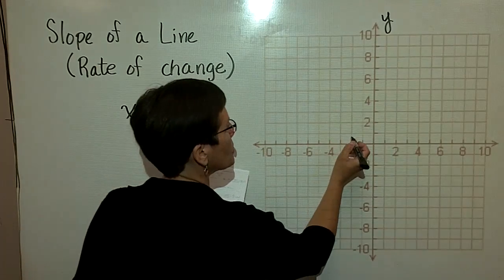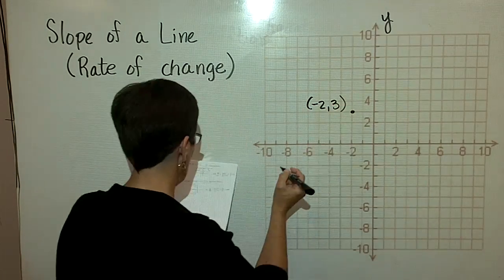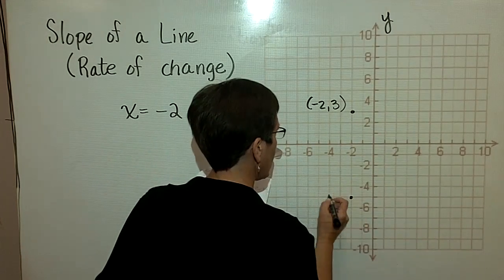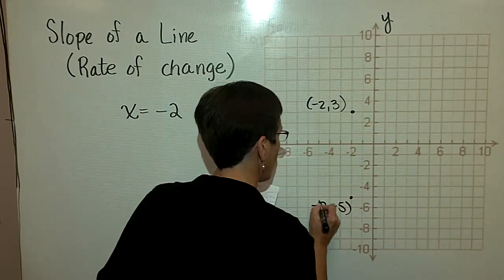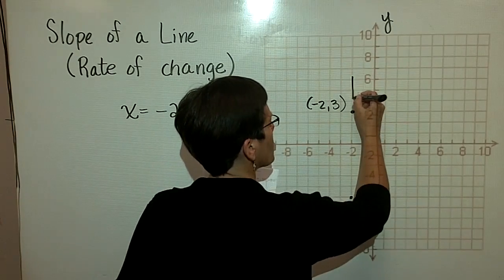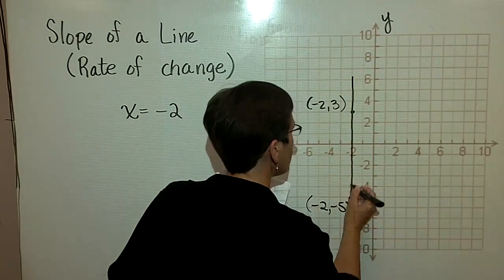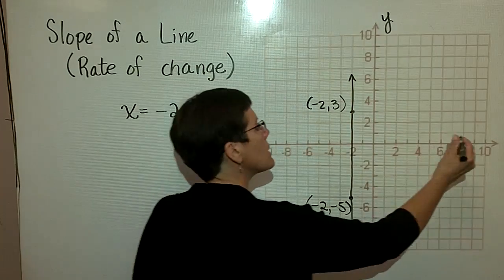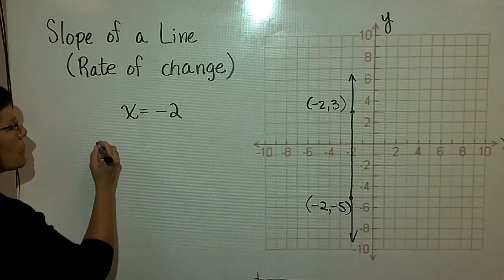I'm going to choose to use this ordered pair where x is negative 2 and y is 3, and this ordered pair where x is negative 2 and y is negative 5. Recall that the graph of a line where x equals a number, a constant, is a vertical line that is perpendicular to its own x-axis.